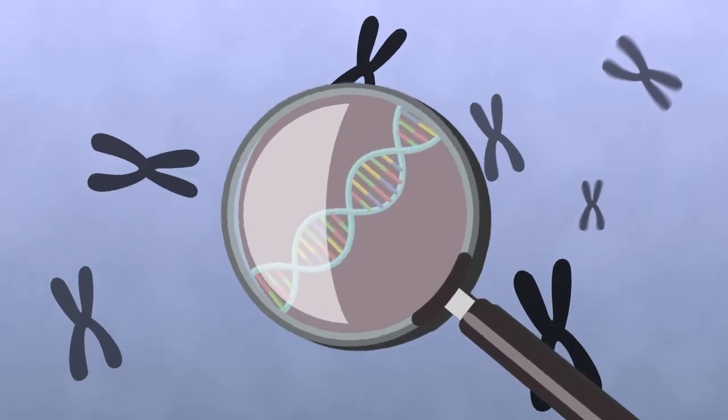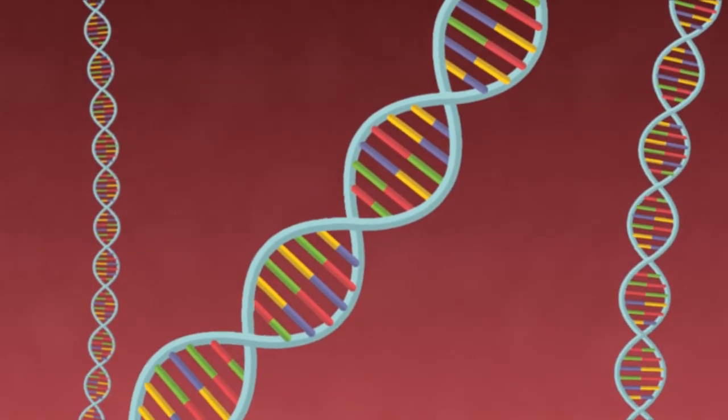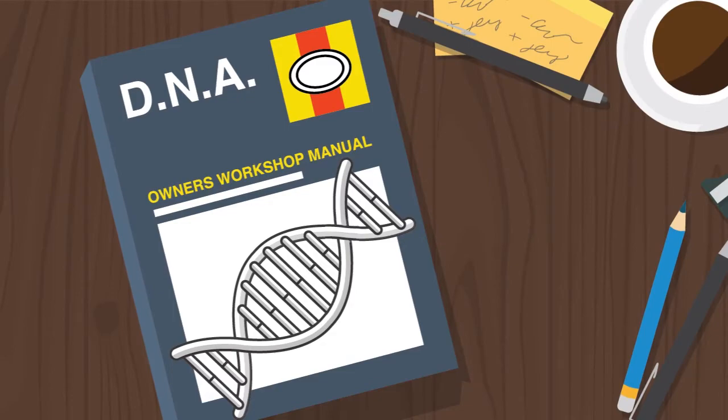An organism's genetic material, or genome, is made of long molecules of DNA. These carry instructions on how to build that organism, like a manual which tells all the cells in the body how to behave.